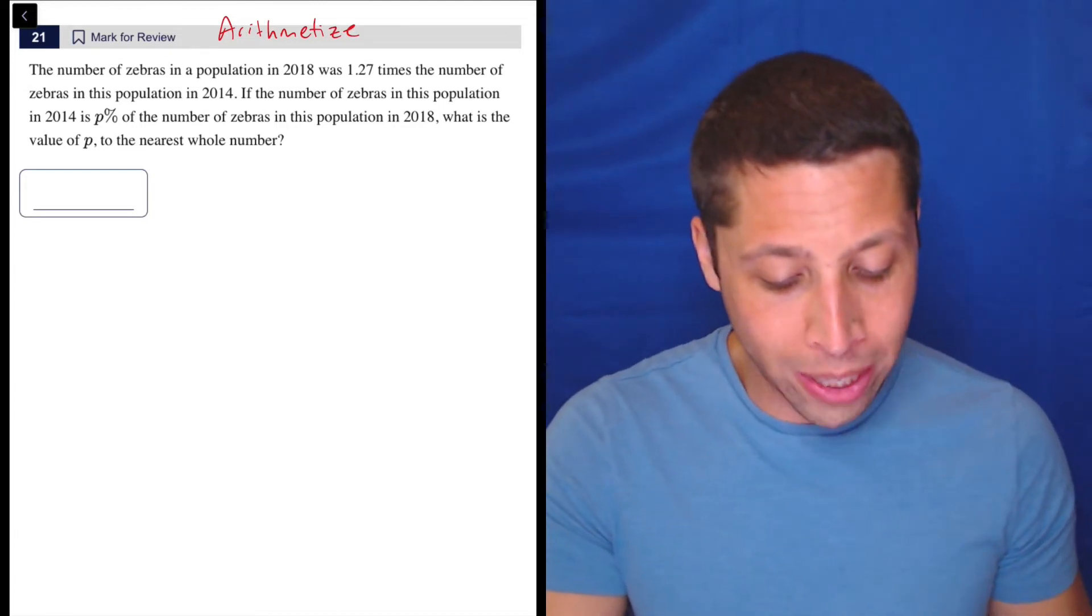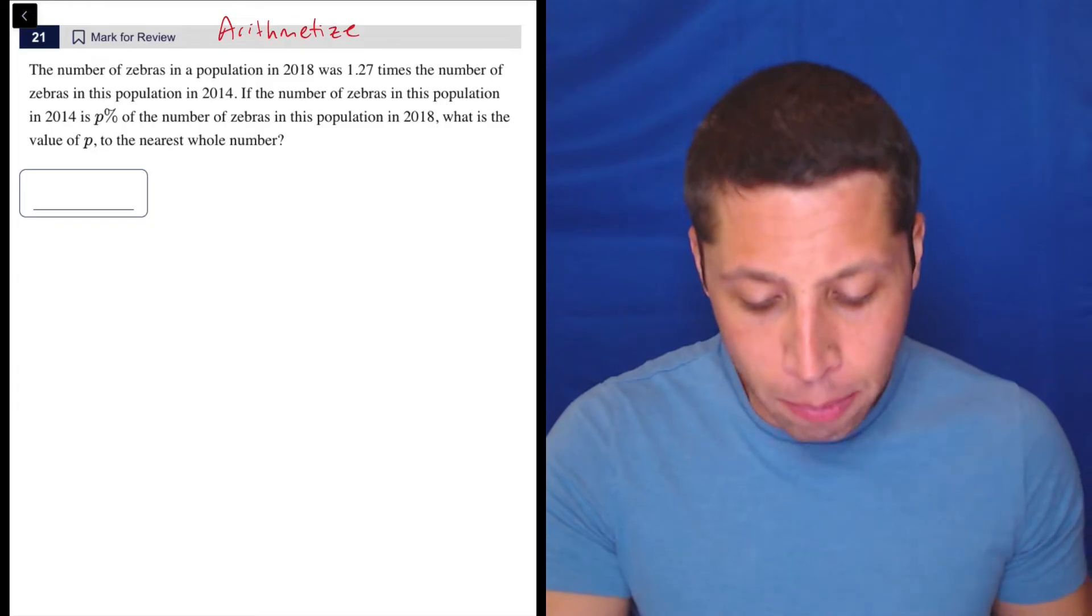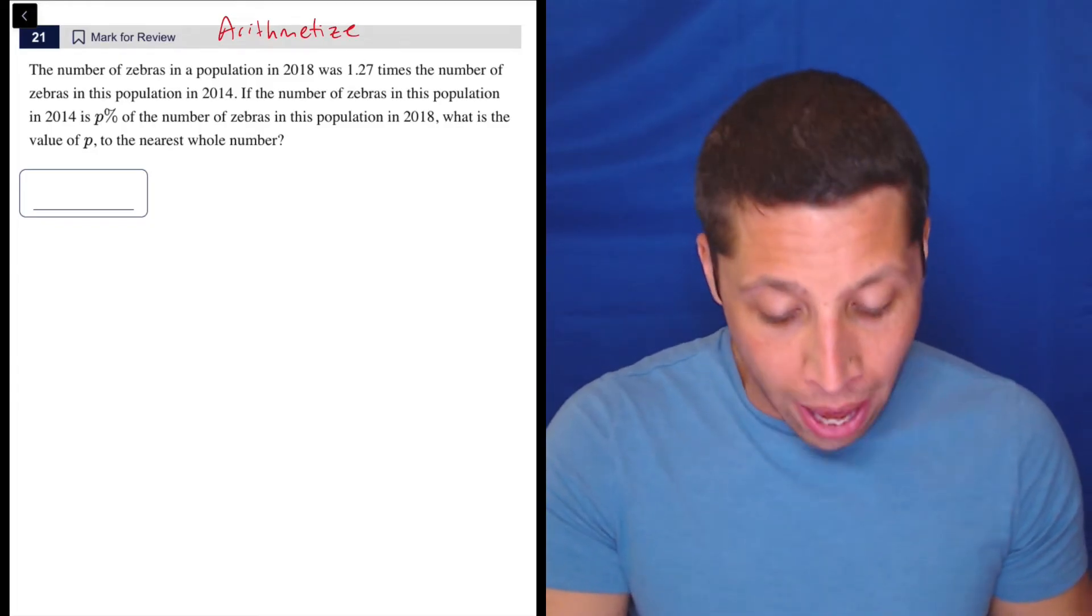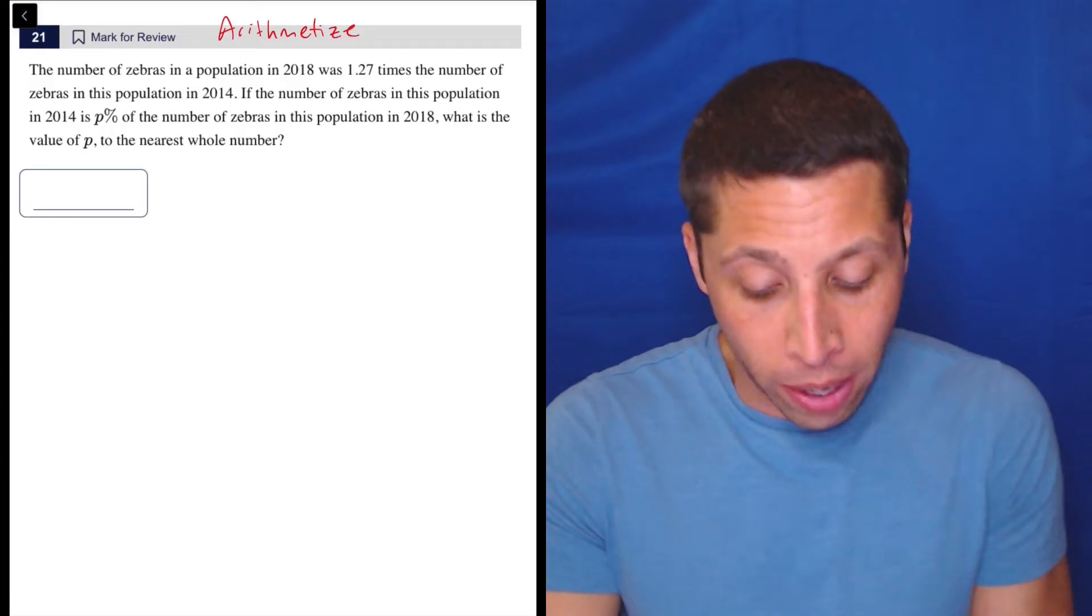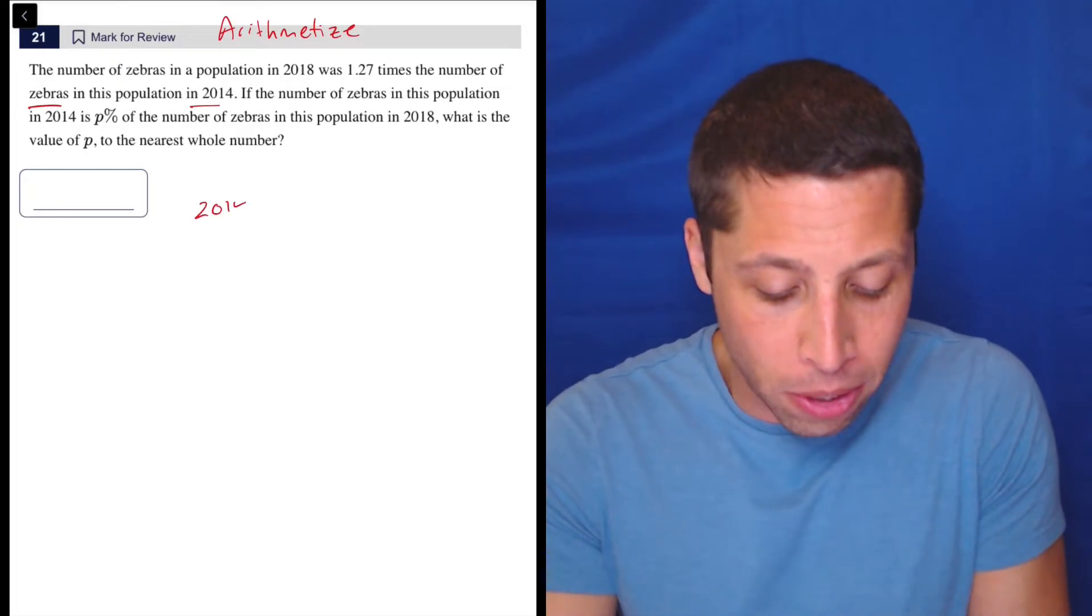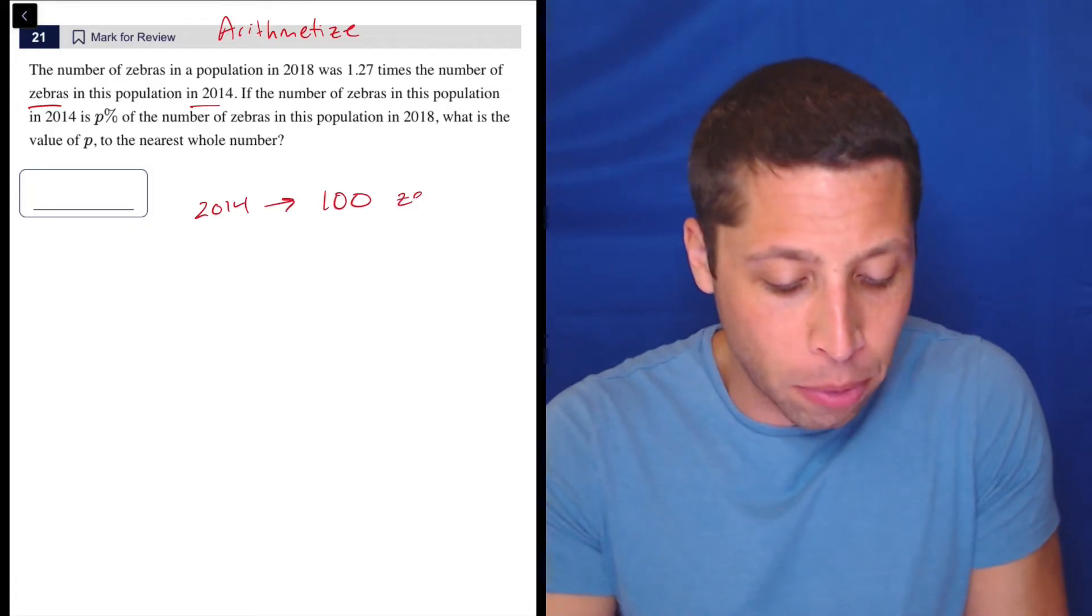The number of zebras in a population in 2018 was 1.27 times the number of zebras in this population in 2014. Okay, so let's start with the easier number, right? The number of zebras in 2014, that feels like the easier number to deal with because that's kind of our base. So let's just say there's a hundred zebras.